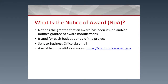So what is the Notice of Grant Award? The Notice of Grant Award notifies the grantee that an award has been made or that a revision has occurred. It is issued each budget period and is sent to the business official via email, and it is also available in the ERA Commons to the principal investigator. It is only sent to one person or office — the business office. For the PI to find the Notice of Grant Award, they need to go into the ERA Commons and find it.